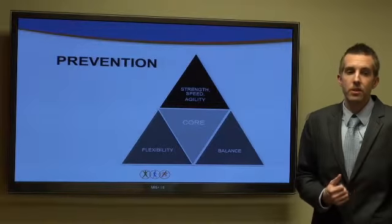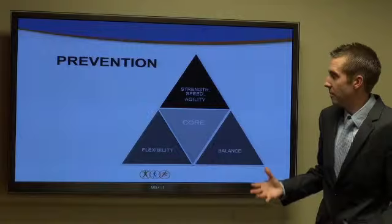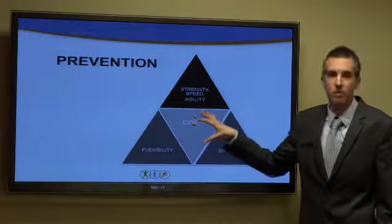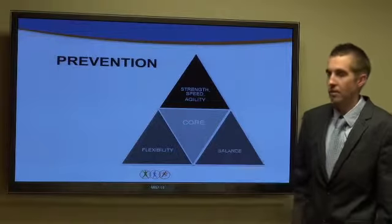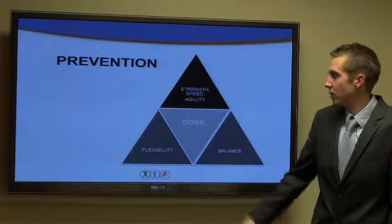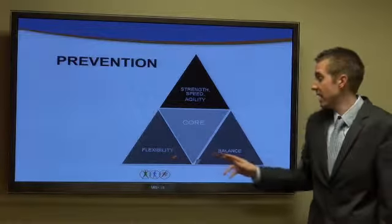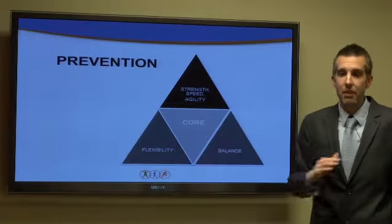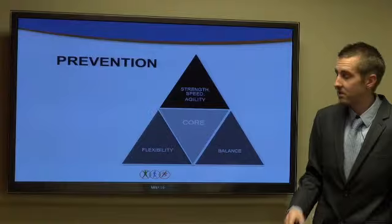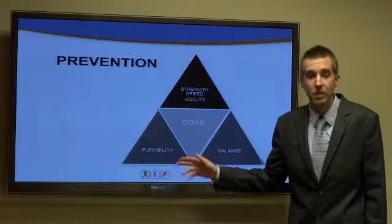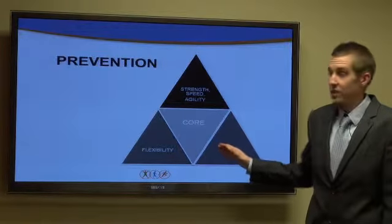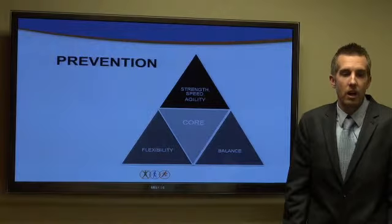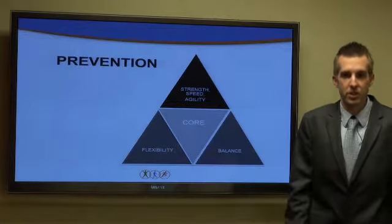For prevention of injuries, I consider it a triangle. Your core is the most important part, so you want to have good core strength. You also want to focus on flexibility and balance — these are at the base because for any athlete, but specifically basketball athletes, you need to be very flexible and balanced to prevent injury. At the top, this is where you take your game to the next level: you work on speed, agility, and strength.